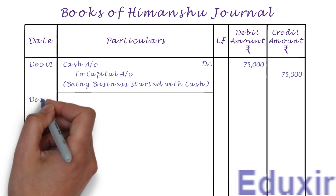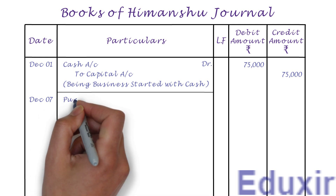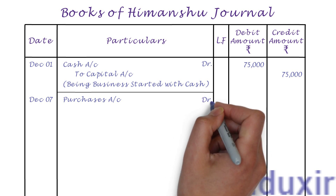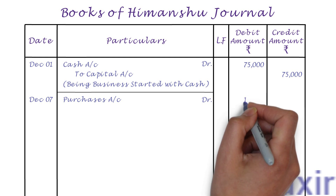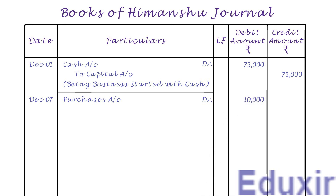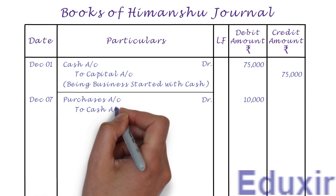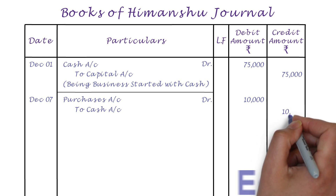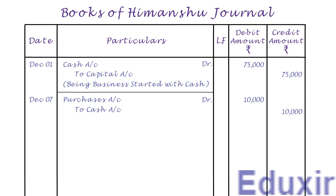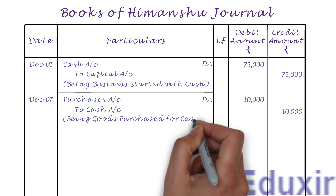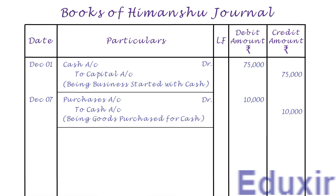Let us first record the date. Let us then record the purchases account as the debit entry and write the text DR to indicate a debit entry. Let us also write the debit amount of 10,000 rupees into the debit amount column. Leaving a margin, let us now record the cash account as the credit entry and write the credit amount of 10,000 rupees into the credit amount column. Let us write the narration: being goods purchased for cash. That completes the journalizing of this transaction.